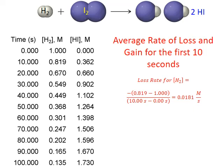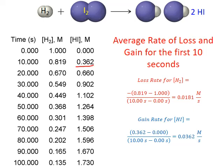Next, let's calculate the rate of appearance for hydrogen iodide, our product. The final concentration for the first 10 seconds is 0.362 minus the initial 0.0, divided by 10 minus 0 seconds, giving a gain rate of 0.0362 moles per liter per second. This is exactly twice the rate of loss for reactant hydrogen, which makes sense because for every one molecule of hydrogen consumed, two molecules of hydrogen iodide are produced.